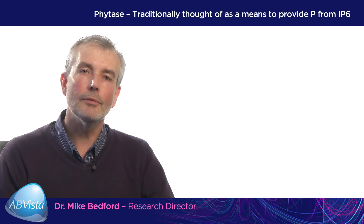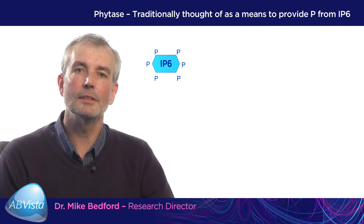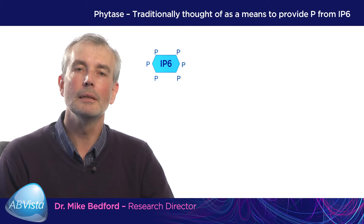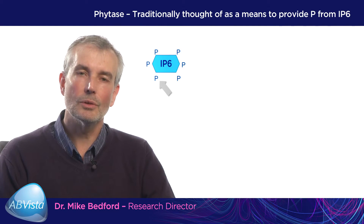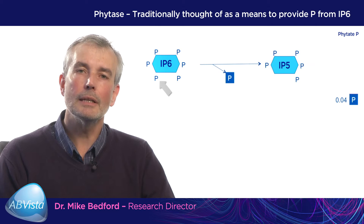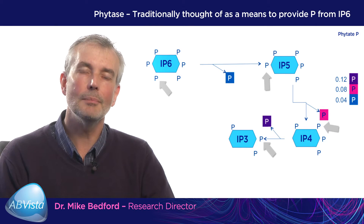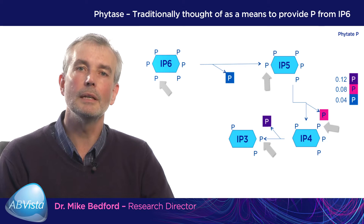Originally, we think of phytases as being used simply to release phosphorus, which is a nutrient with economic value. However, as discussed in part one, we also now want to consider phytases as a means to break down phytic acid — IP6 — and release phosphorus, and then break down IP5, IP4, and IP3, which were identified in part one as being significant anti-nutrients in their own right.